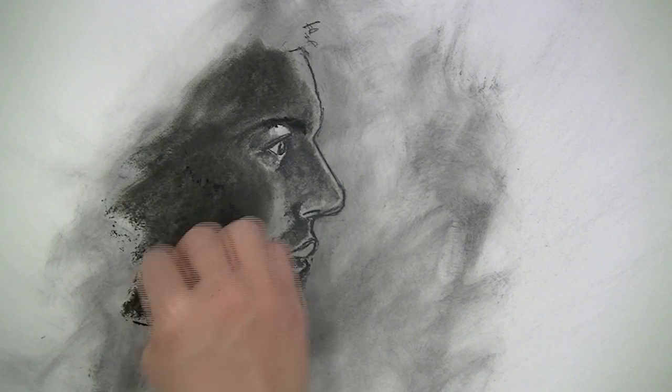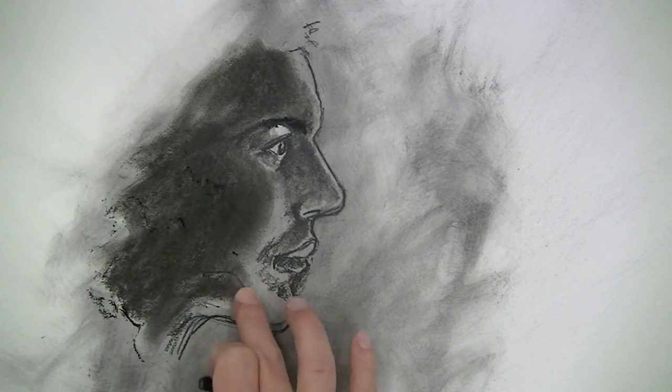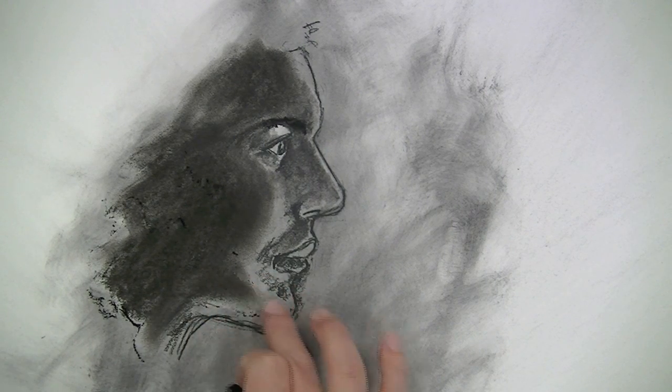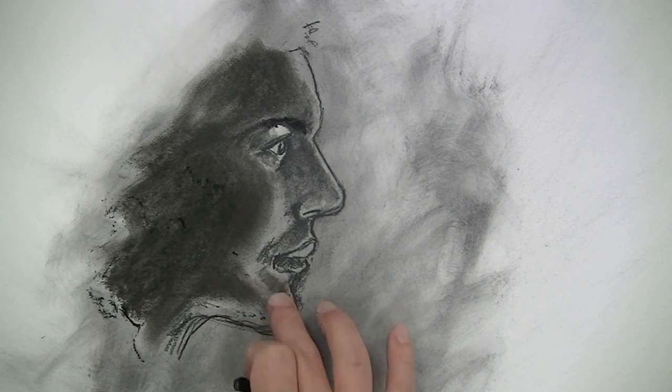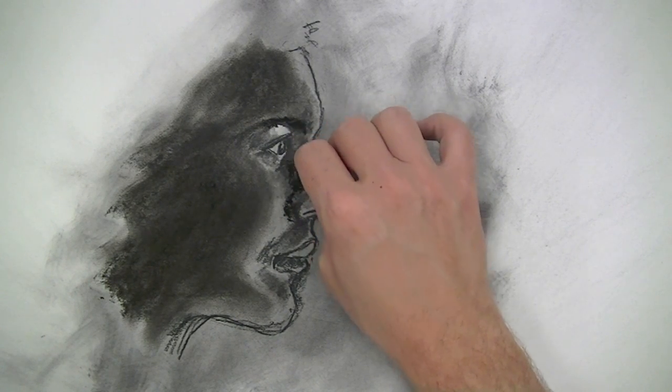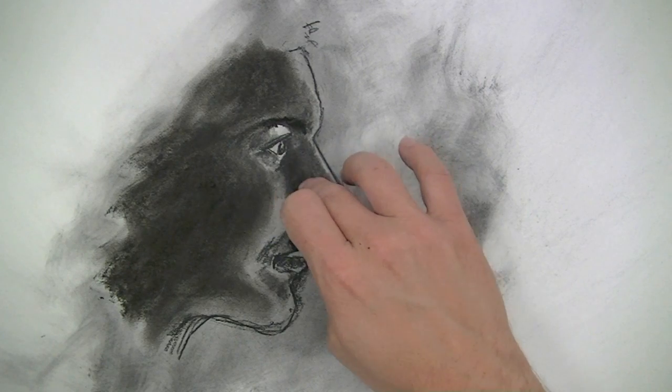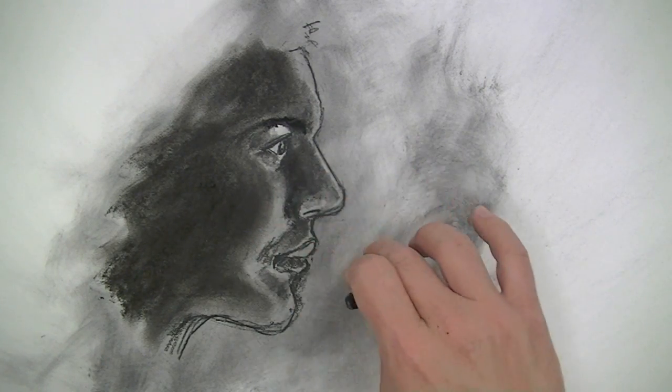When you're applying any type of media whether that be a drawing media or a painting medium you want to make sure that you're thinking about the cross contour lines of the form of the object that you're drawing. In this case the face goes in and out in different areas and I want the stroke that I make on the surface to mimic that form. This will help further the illusion of the form in the drawing and make the drawing a bit more convincing.